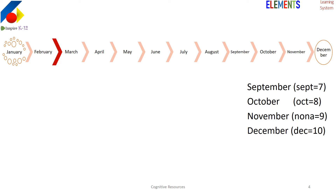But somehow there's a difference between the names of the months and these roots of the words. According to their roots, October should be the eighth month, November the ninth, and December the tenth. But it's not like this — there's a difference of two. October, instead of eight, is the tenth; November, instead of nine, is the eleventh; and December, instead of ten, is the twelfth. So how did this difference come about?